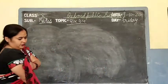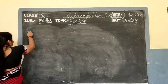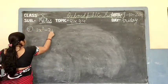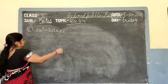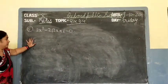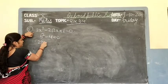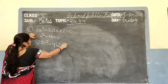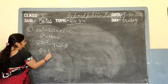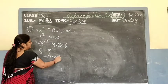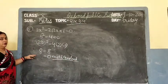Find the roots, if they exist, using the quadratic equation by the Sridharacharya formula. First number: 2x square minus 2 root 2 times x plus 1 equal to 0. First check if roots exist using the Sridharacharya method. For that, calculate b square minus 4ac.